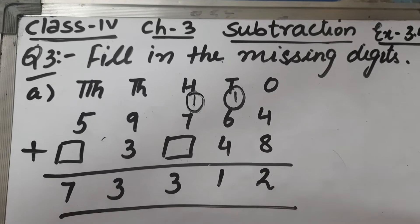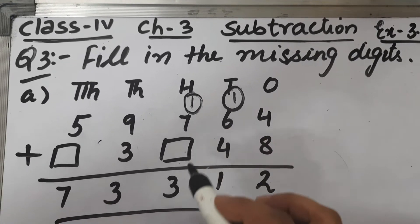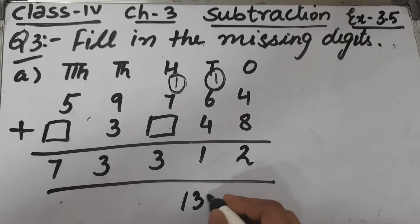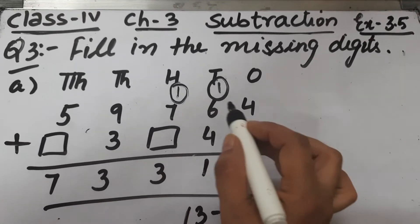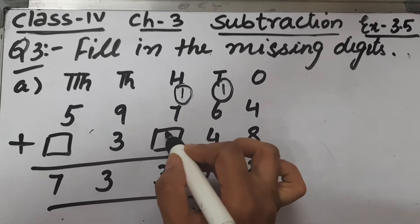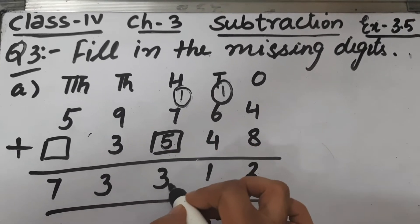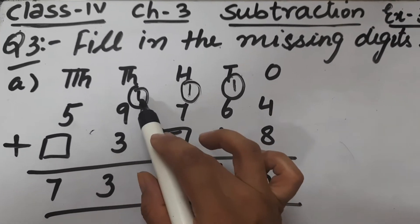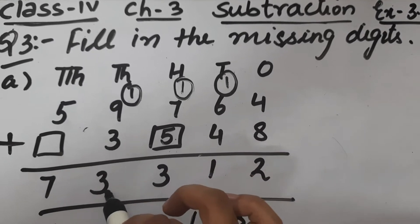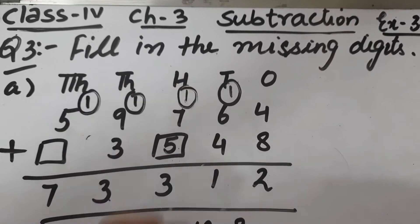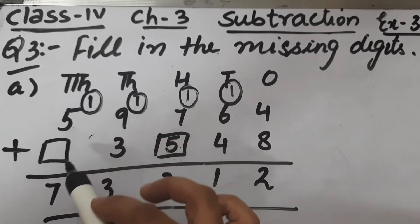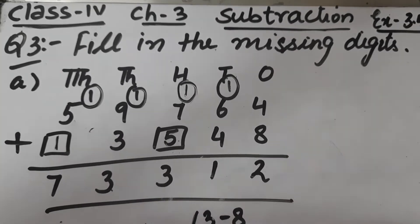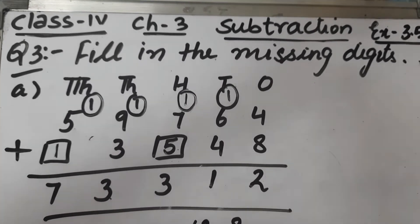Now 7 plus 1 carried is 8. We need to find what to add to 8 to get 13. So we subtract 8 from 13, which gives 5. If we add 5 to 8 we get 13 — 3 comes here and 1 is carried. Then 5 plus 1 is 6. What should be added to 6 to get 7? If we add 1 to 6, we get 7. So this completes part A.